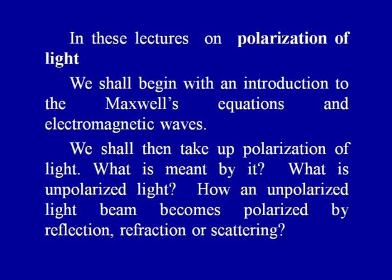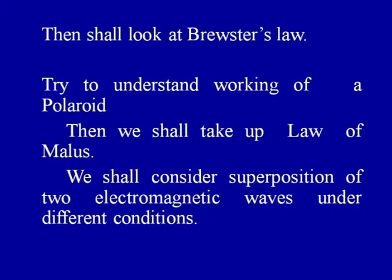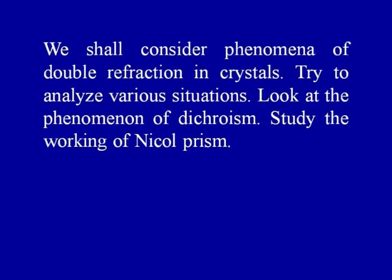We shall then take up the problem of polarization of light — what is meant by it, what is unpolarized light, and how an unpolarized light beam becomes polarized by refraction or scattering. Then we shall look at Brewster's law and shall try to understand the working of a polaroid. Then we shall take up the law of Malus. We shall consider superposition of two electromagnetic waves under different conditions. We shall consider the phenomena of double refraction in crystals and anisotropic crystals, and try to analyze various situations therein. We shall also look at the phenomena of dichroism.